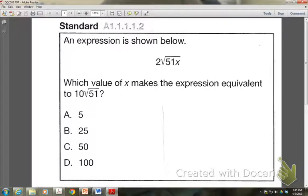Alright, so this question that you're seeing here is a sample question from the Algebra 1 keystone. It is written a little bit different than the ones we've done so far in class. It says an expression is shown below, 2 square roots of 51x. And the question is, which value of x makes the expression equivalent to 10 square roots of 51?